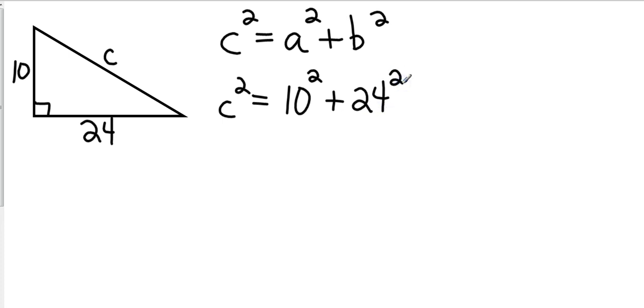Okay, and so then I'm going to find out those actual values. So I have C squared equals 10 squared is 100, and 24 squared is 576. You can use a calculator on this section.